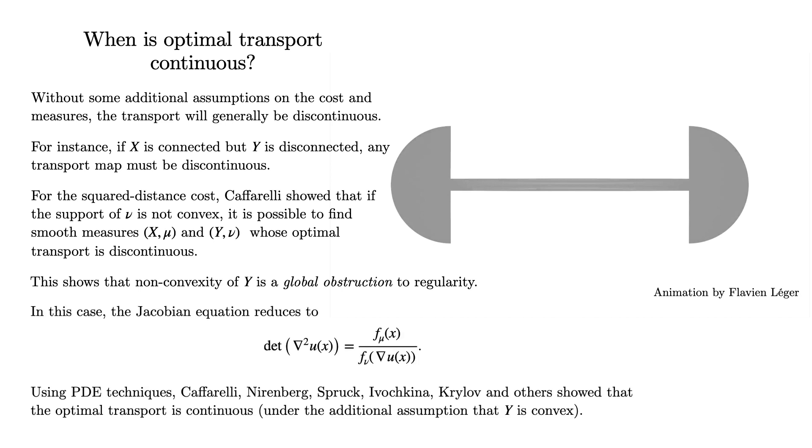However, the situation is not completely hopeless. For the squared distance cost in Euclidean space, the Jacobian equation simplifies considerably to a more familiar Monge-Ampère equation. And using PDE techniques, people were able to study this equation and show that the transport is, in fact, continuous under various assumptions on the measures and with the additional assumption that Y is convex. However, for more general cost functions, the regularity problem remained completely unsolved for another decade.